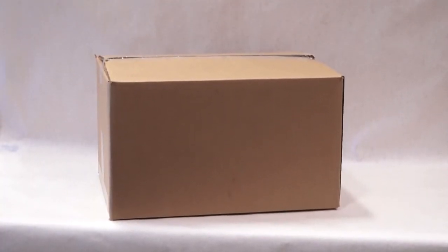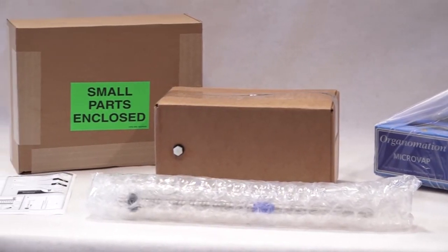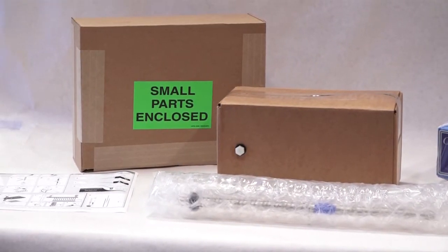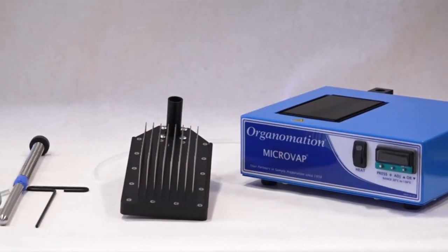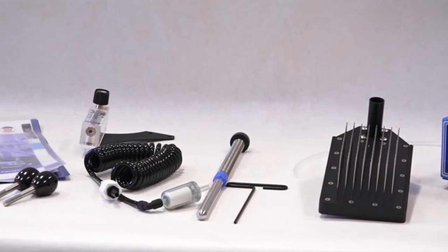First, carefully check the contents of all cartons received for damages which may have occurred in transit. Retain all cartons and packing materials until the instrument has been assembled and tested. Contact Organimation immediately if any damages or discrepancies are found.